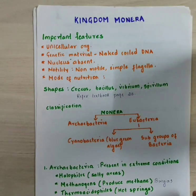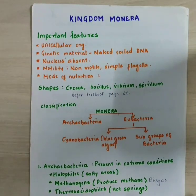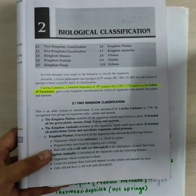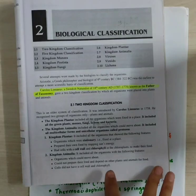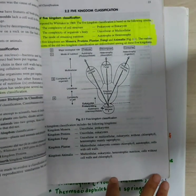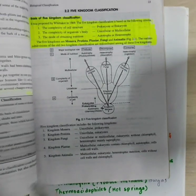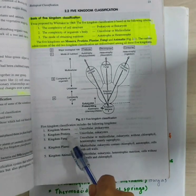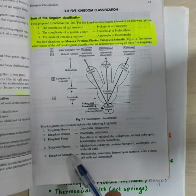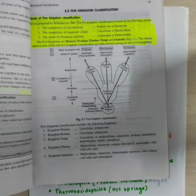Good morning class. This video is the continuation of biological classification which we have already started in the last class. There are five kingdoms classifications. Under the five kingdoms, we have Kingdom Monera, Protista, Fungi, Plantae, and Animalia. Today we are going to see each of the kingdoms in detail.